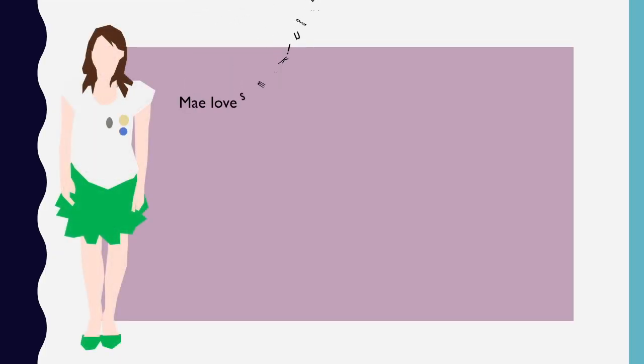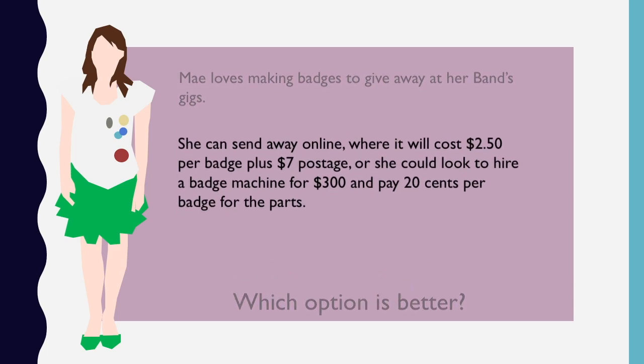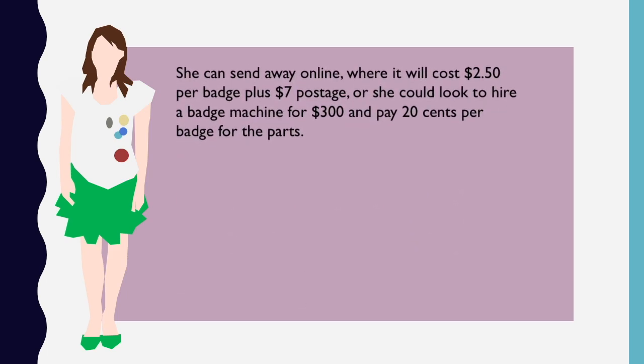In the case of Mae's problem, we can write expressions for the cost using each of the methods. If Mae sends away, it will cost $2.50 per badge,